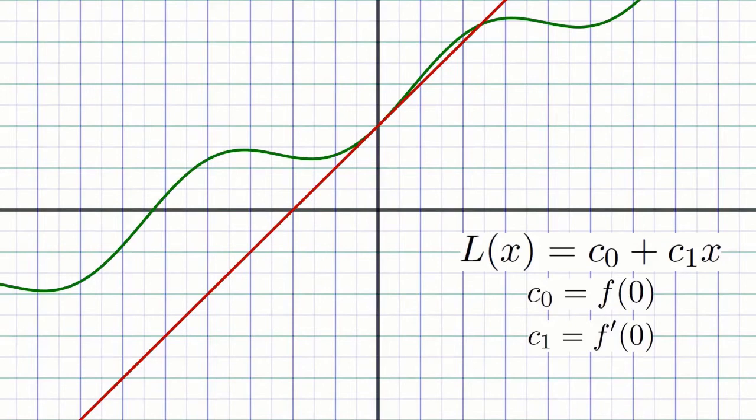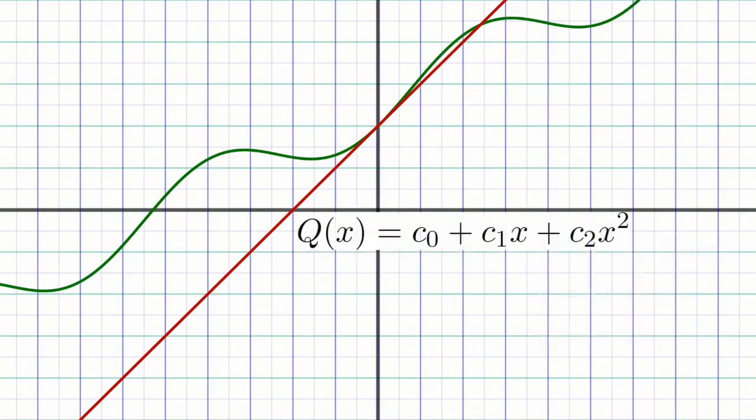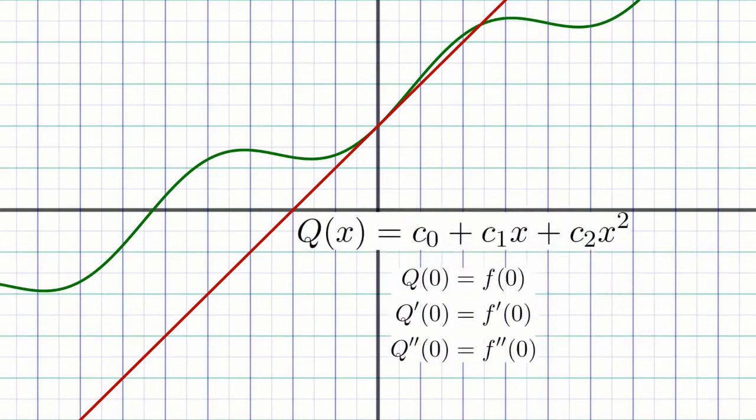Similarly, to obtain a quadratic approximation at x equals 0 for f, we need to determine three coefficients: c0, c1, and c2. We can determine what they are by requiring the quadratic approximation q of x to agree with the target function f of x at x equals 0 along with its derivative and second derivative. That is, we require q of 0 to equal f of 0, q prime of 0 to equal f prime of 0, and q double prime of 0 to equal f double prime of 0.